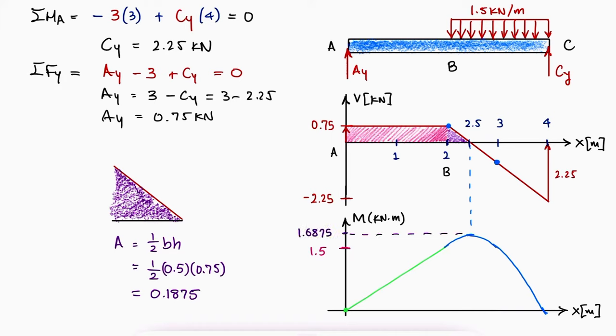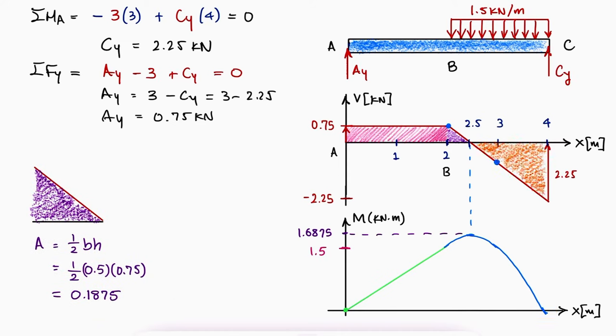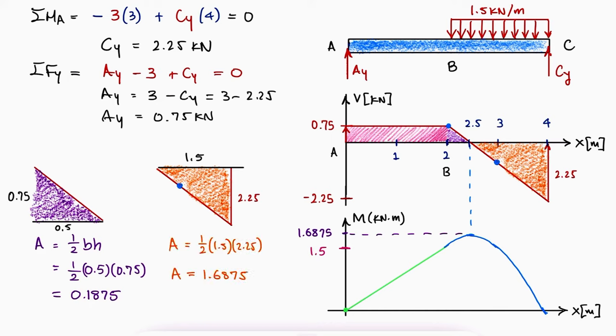To make sure that the moment diagram does indeed end at 0, we can also calculate the area under the curve between the point of 0 slope and C. Since this area is negative, this is the value we would subtract from the maximum moment to get to C. This means that the bending moment diagram does indeed end at 0.